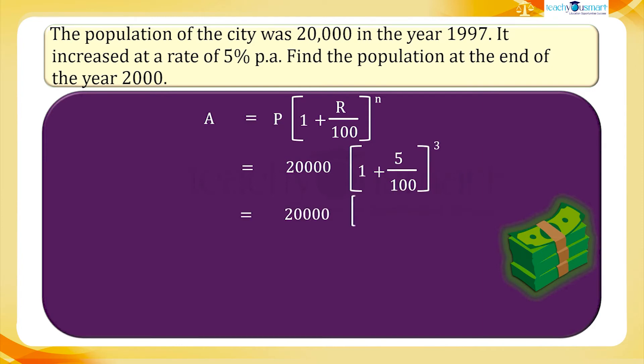Equals 20,000 multiplied by 1 plus 0.05, the whole raised to 3, equals 20,000 multiplied by 1.05, the whole raised to 3, equals 20,000 multiplied by 1.157625.